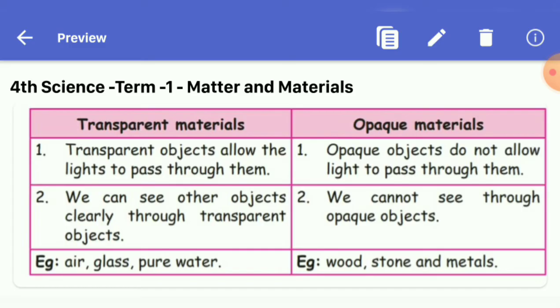Transparent objects allow the lights to pass through them. Opaque objects do not allow light to pass through them. Second one: we can see other objects clearly through transparent objects. We cannot see through opaque objects.